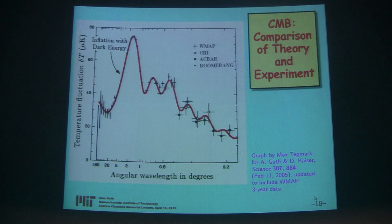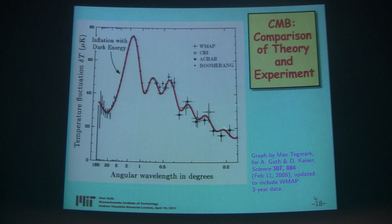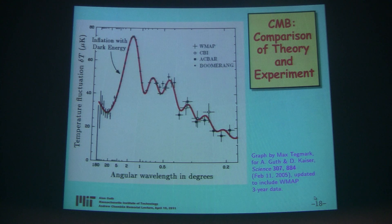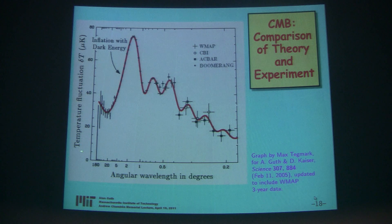So here's the data that I love so much. This is the theoretical triumph that I bragged about in my preview. The red curve is the theoretical prediction. These black dots are the data. And what we're plotting is the spectrum of these ripples that we see in the cosmic background radiation — the non-uniformities in the temperature pattern — specifically the intensity of those fluctuations as a function of their wavelength.